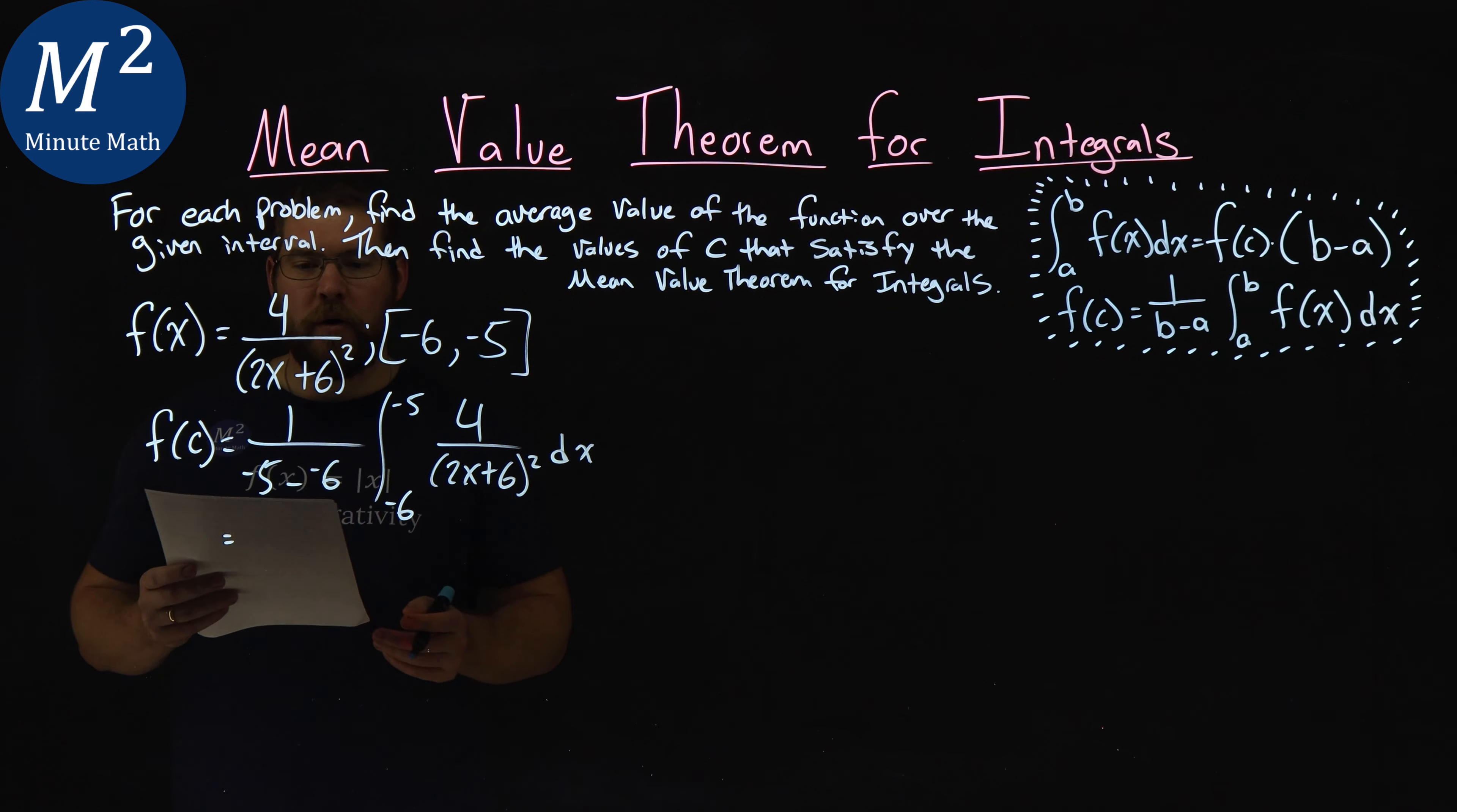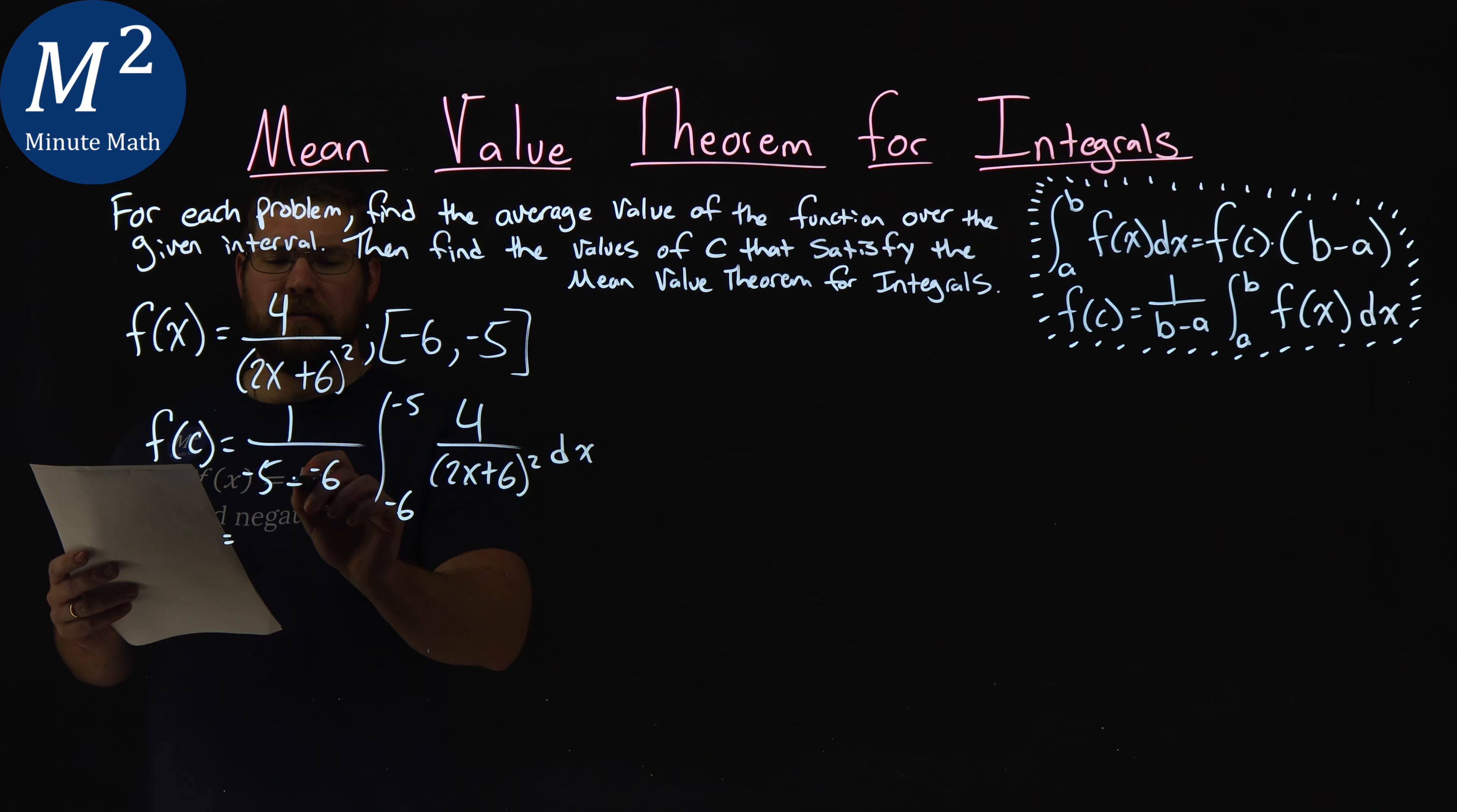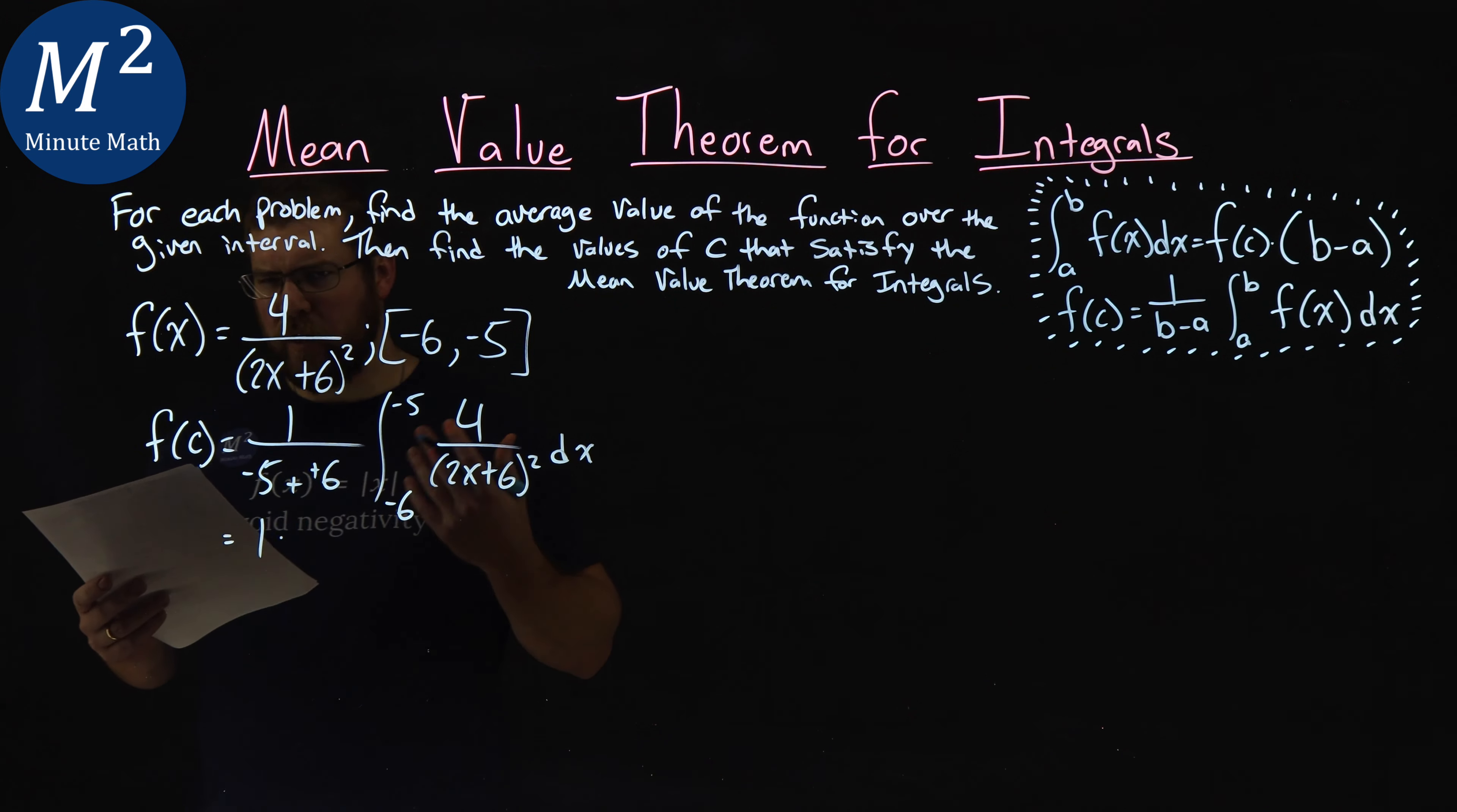Well, the left-hand side is pretty simple, 1 over, well, negative 5 minus a negative 6 plus positive 6, we just have a 1 out front here, right? 1 over 1.